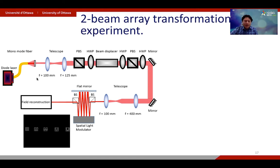Experimentally, it looks like this. There is a diode laser coupled to a single mode fiber. Then we expand the beam with a telescope. And by using polarization optics and a beam splitter, we create a two-beam array. So the two-beam array is reflected back and forth between the spatial light modulator and the flat mirror. So the spatial light modulator has these phase masks to account for the five reflections. And at the output, we need to make some measurement.